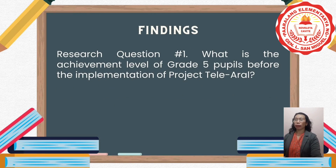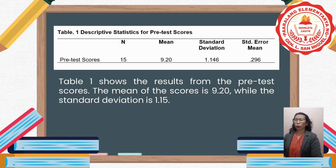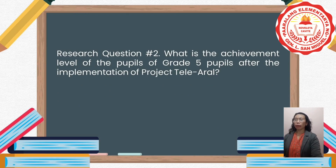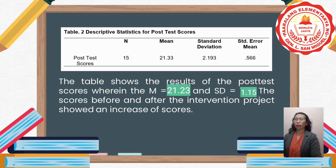Research question number one: What is the achievement level of grade 5 pupils before the implementation of Project TELEARAL? The table shows the results of the post-test scores, wherein the mean is 21.33 and the standard deviation is 2.19. The scores before and after the intervention project showed an increase.